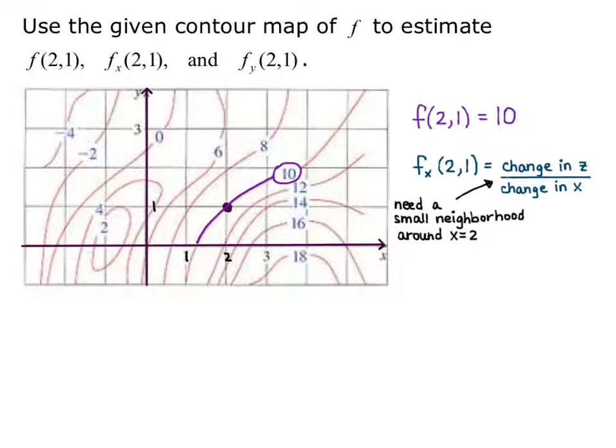To do this, we need a small neighborhood around x equals 2. Because I'm doing the derivative with respect to x, I'm going to look to the left and the right of my point, because I'm going to be heading in the x direction and figuring out the slope in that direction. That's what my partial derivative with respect to x finds. So I'm going to pick a little neighborhood. I put these parentheses around the point x equals 2. I might say that this is at x equals 1.5.